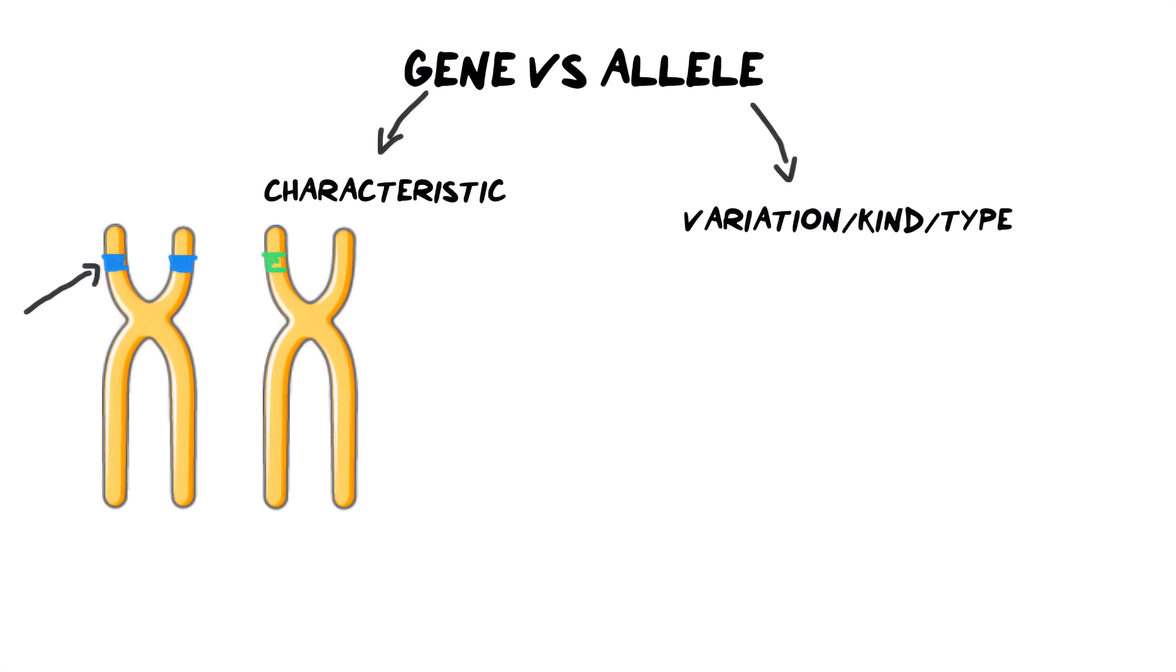And then on your other chromosome, you have a different allele. Let's say you had green eyes on this particular chromosome. So that's your allele. Now you will notice that the gene is in exactly the same place on both of the chromosomes, which means that it is the same characteristic. It's the same gene, but the colors are different.